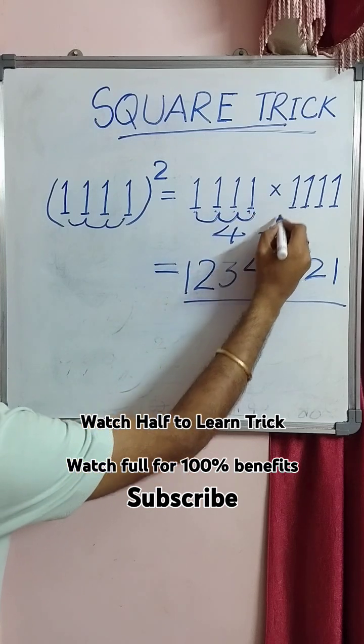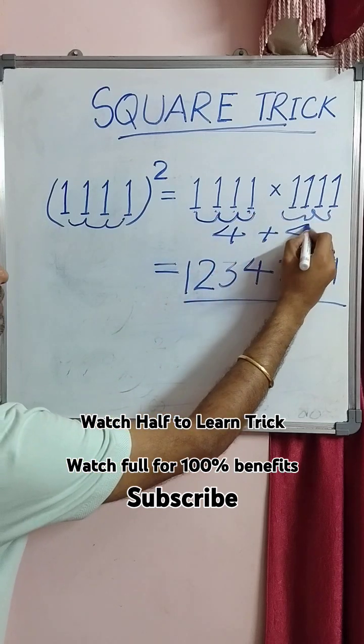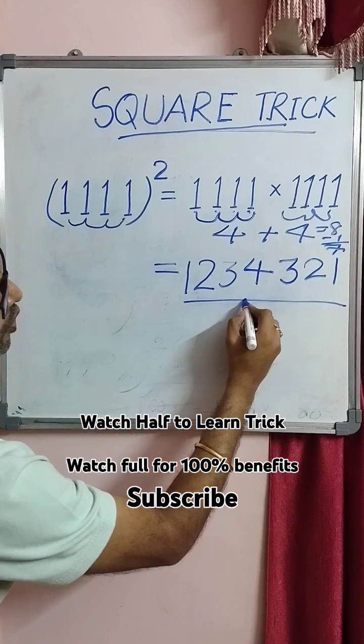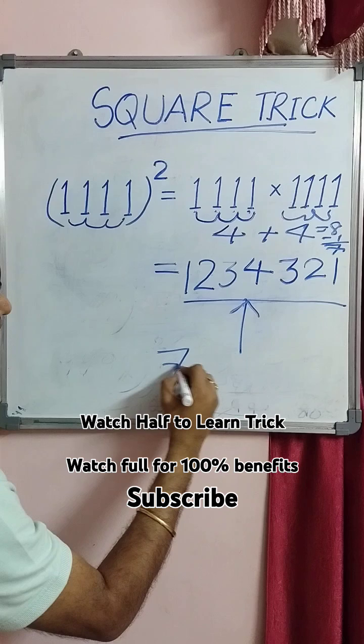So four plus here also four digits. So four plus four is eight. Eight minus one is equal to seven. So answer will have seven digits.